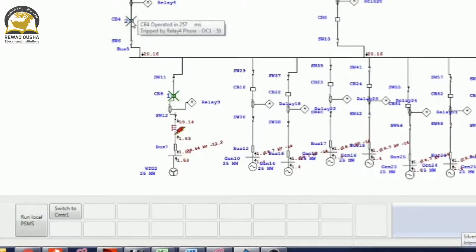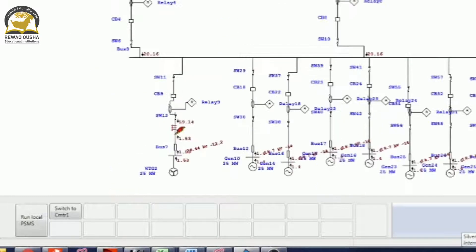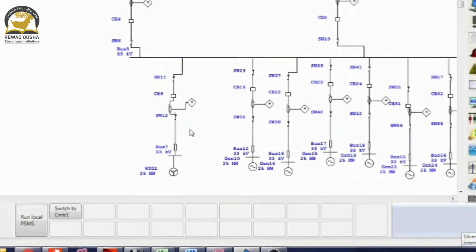You can see here that first the downstream breaker trips, then upstream, thereafter the source side circuit breaker trips. These simulations we will learn through ETAP.